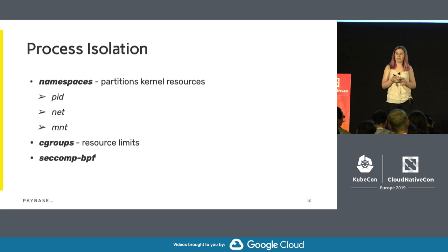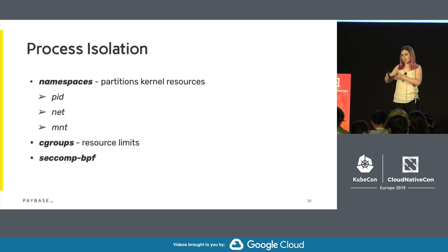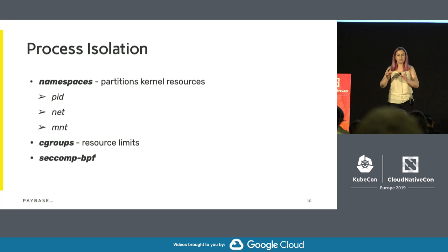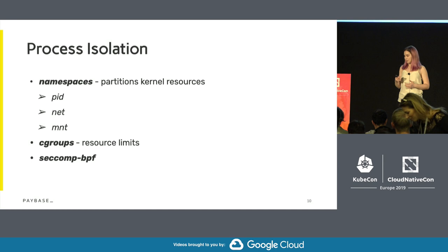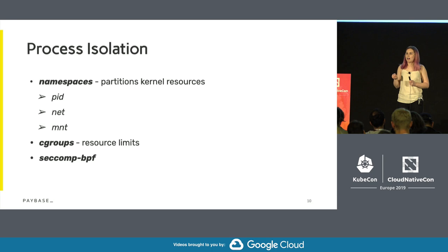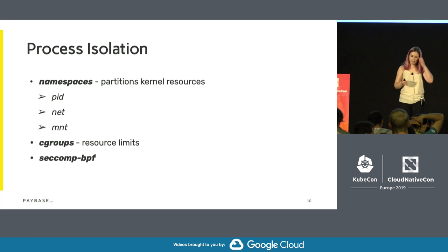We have three different namespaces that are relevant here. We have the PID — the process ID namespace — that gives us the numbering of processes in such a way that in different namespaces you can use the same PID without being aware of each other, without interacting with each other. Then we have the networking namespace, which makes sure that the ports you're using in containers are separate and don't interfere with the ports already open on the kernel itself.